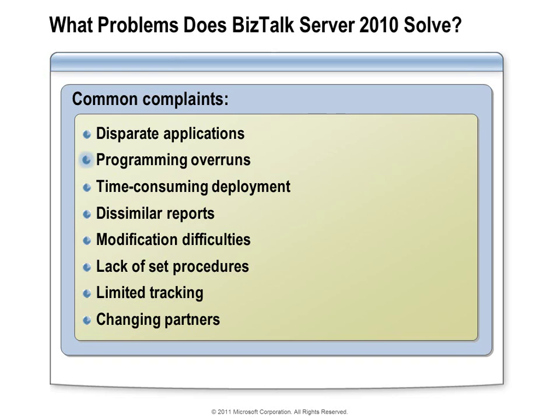If integration components are scattered across many different platforms and systems, deployment and maintenance can become unbearable. Even if you've handled all that and have your integrations up and running, another challenge is reporting. If one system knows something about a business process and another system knows another piece, it can be very difficult to pull all that data together to make a coherent report. What you often end up with is multiple reports, each reporting part of the data. And when you try to reconcile those, they don't always agree — leaving you to answer which system has the right answer.